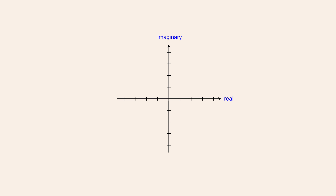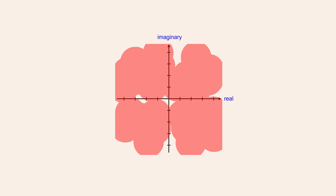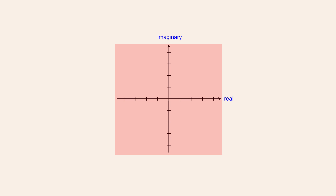If we consider these two perpendicular number lines as two axes that define a plane, then any point on that plane could represent a pair of real and imaginary numbers, in the same way that any point on the x-y plane represents a pair of x and y values. These sums of real and imaginary values are referred to as complex numbers, and the infinite set of complex numbers is represented by the infinite collection of all the points on this complex plane.